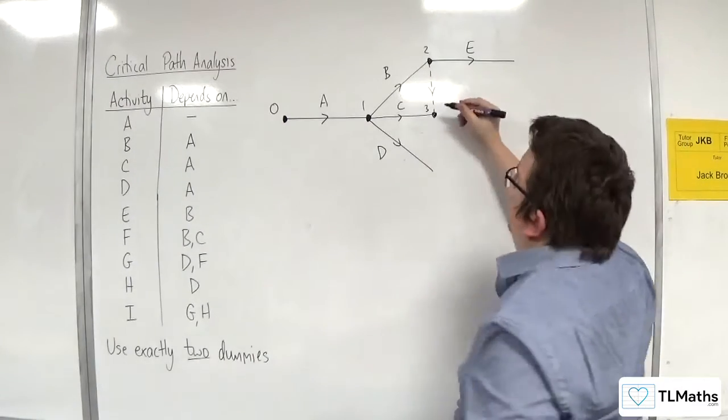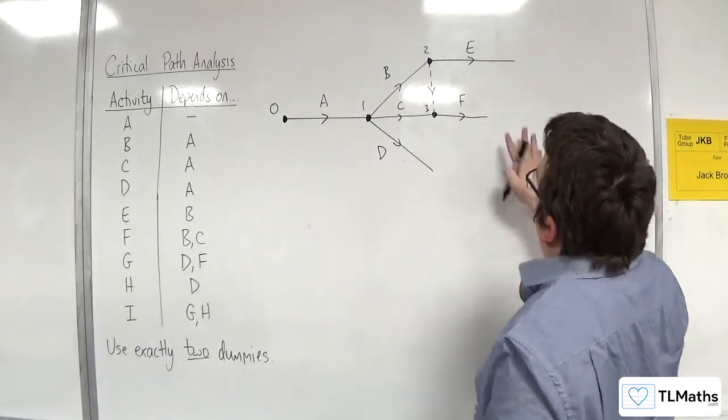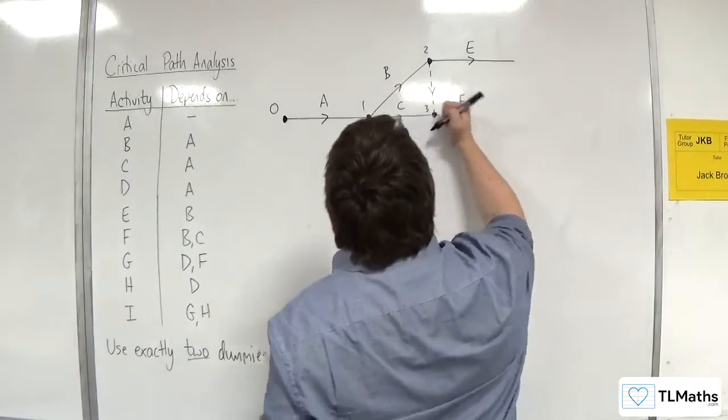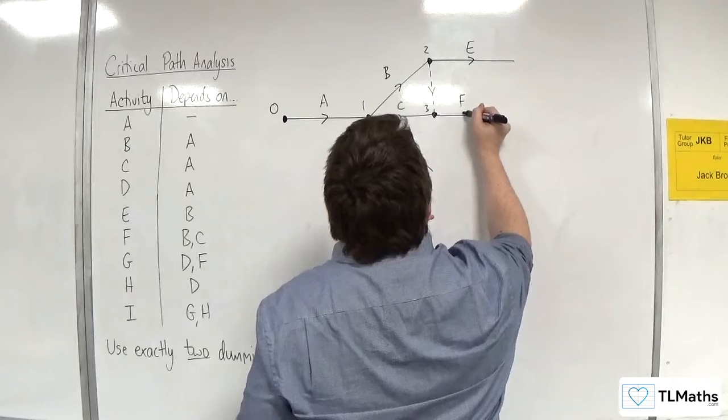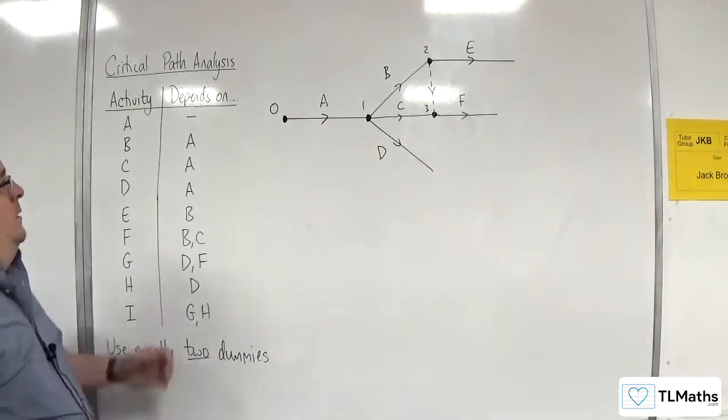And I need F, so let's have it coming off there. There's F, not a very straight line. Let's try that again. Okay, so that's F.